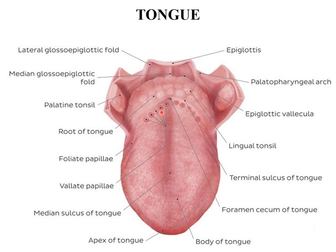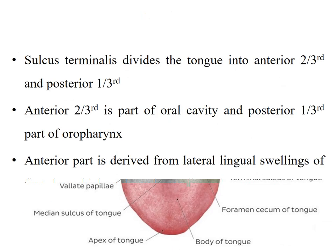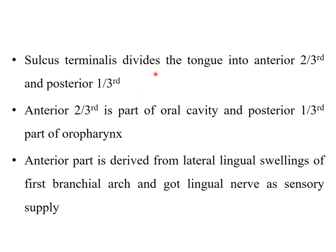The tongue is divided into mainly two parts: the anterior two-thirds and the posterior one-third. The posterior one-third forms the base of the tongue and is part of the oropharynx, while the anterior two-thirds is part of the oral cavity. This is the body of the tongue, this is the lateral border, and this is the tip. The sulcus terminalis divides the tongue into the anterior two-thirds and posterior one-third.